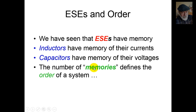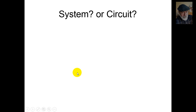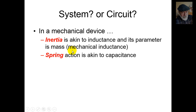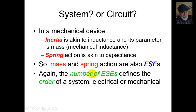The number of memories in a system is what defines its order. And I say system, not just circuit. In a mechanical device, inertia is akin to inductance and its parameter is mass — mechanical inductance. Spring action, that is elasticity, is akin to capacitance. So mass and spring action are also energy storage elements. The number of ESCs is what defines the order of a system, be it electrical or mechanical.